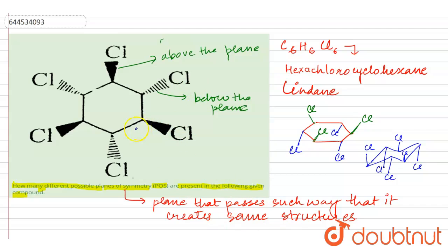A plane of symmetry divides the compound into two equal halves. Suppose we pass a plane of symmetry like this — on the left-hand side and right-hand side, both have the same number of carbons. The chlorine present on the left above the plane is also present on the right above the plane, and both chlorines at the bottom are present below the plane. This is the first plane of symmetry.